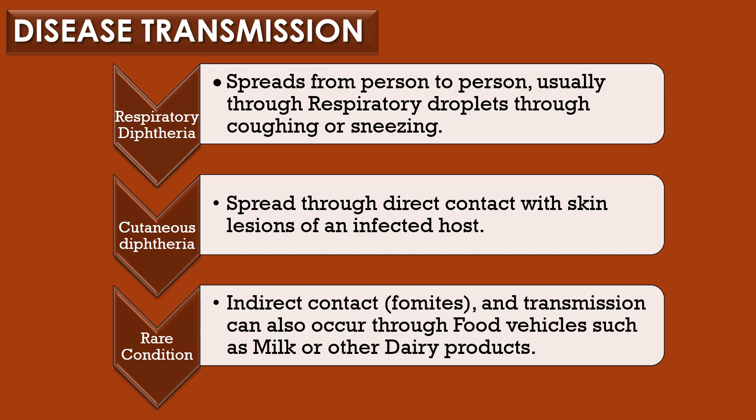Disease transmission of Corynebacterium diphtheriae. Respiratory diphtheria spreads from person to person, usually through respiratory droplets via coughing or sneezing. Cutaneous diphtheria is spread through direct contact with skin lesions of an infected host. On rare occasions, diphtheria can be transmitted through indirect contact like fomites, and transmission can occur through food vehicles such as milk or other dairy products.